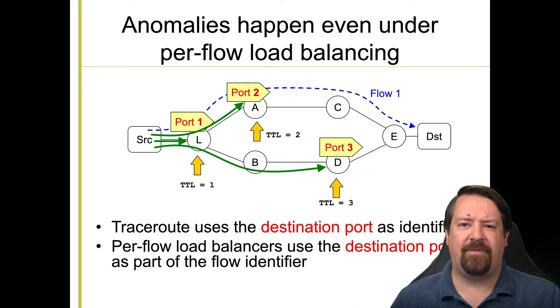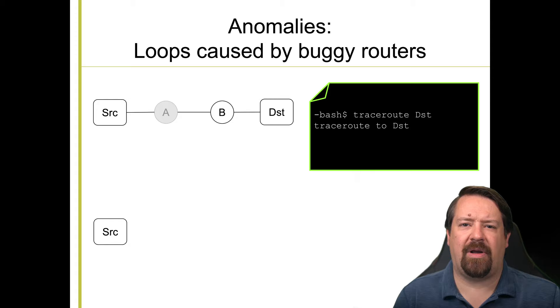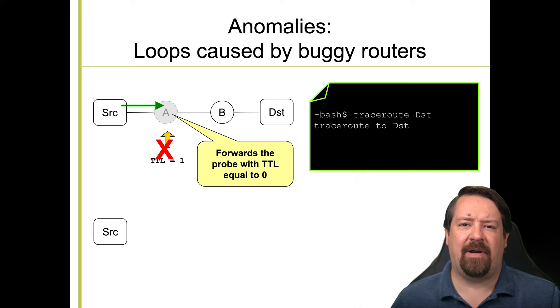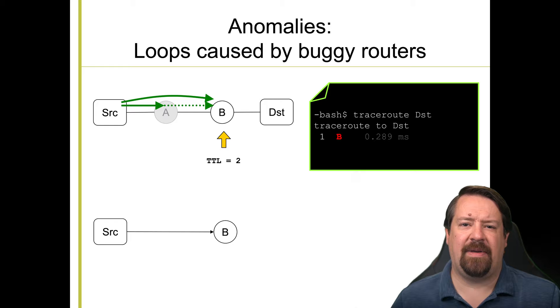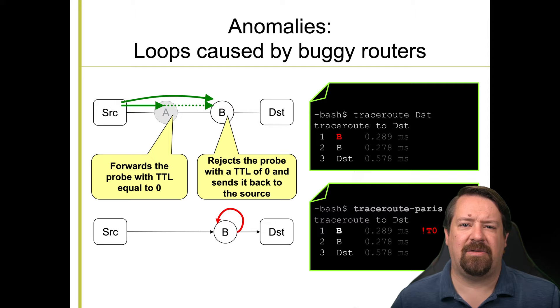In addition to load balancing, there's other reasons we might have anomalies in our traceroute output. In this case, we're tracerouting from the source to destination, and buggy router A doesn't respond when the TTL expires. It forwards the packet even though the TTL is zero. And so B then has to respond to the TTL zero packet. And so the first router that the source observes is B. And then when it sends out TTL two, that also arrives at B and gets expired. And so now we have B in the path twice, even though in reality, there's no routing loop going on here. So again, our inferred path is incorrect in this case due to buggy software on router A.